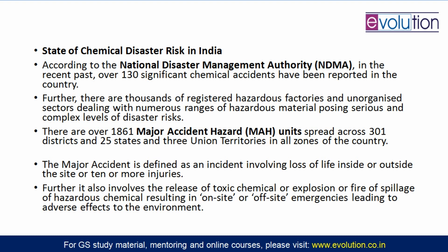Has this happened for the first time? No — chemical disasters have happened many times. Remember the Bhopal gas tragedy involving methyl isocyanate. According to National Disaster Management Authority data, over 130 significant chemical accidents have been reported in the country recently. Many registered hazardous factories exist, but there are also many unregulated unorganized sector units dealing with hazardous chemicals that pose serious threats. There are over 1,861 major accident hazard units spread across 25 states and 3 union territories.